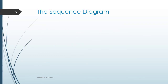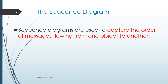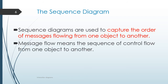We will first see what a sequence diagram is. Sequence diagrams are used to capture the order of messages flowing from one object to another. Sequence diagrams capture message flow and timing information — the sequence of control flow from one object to another.